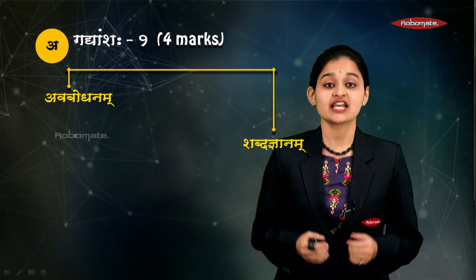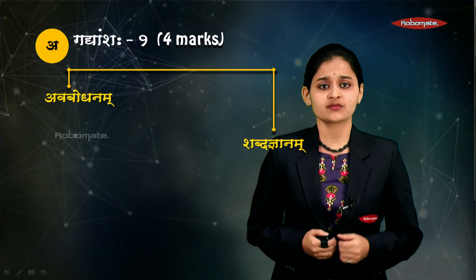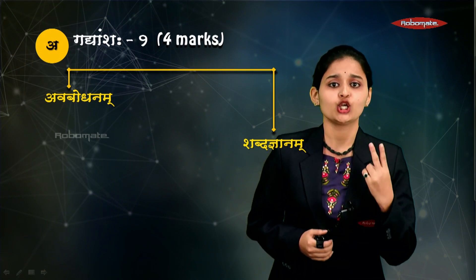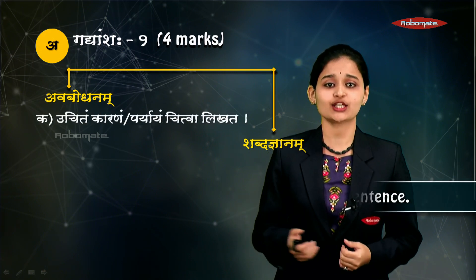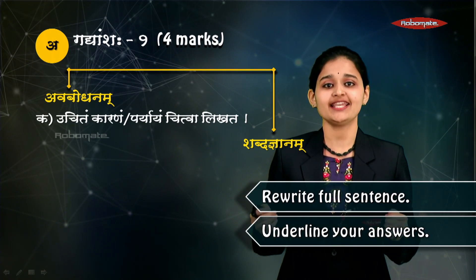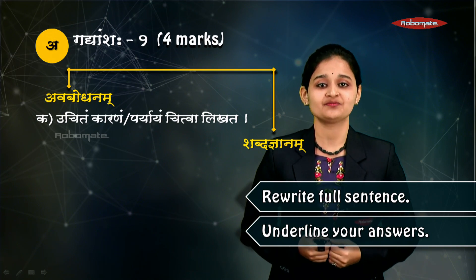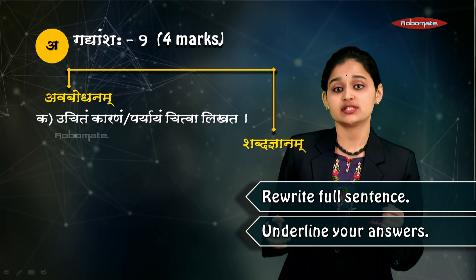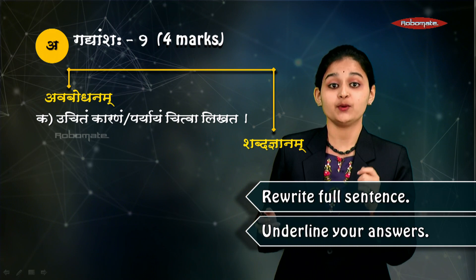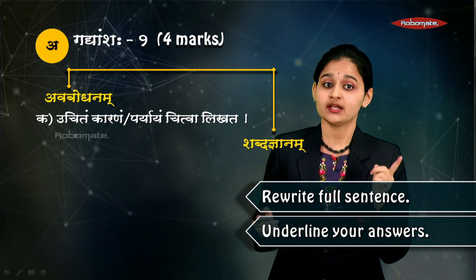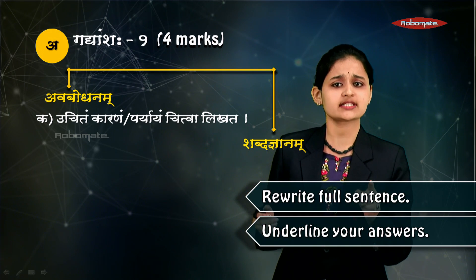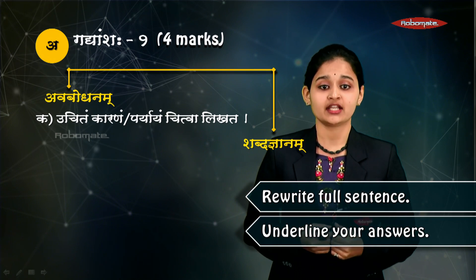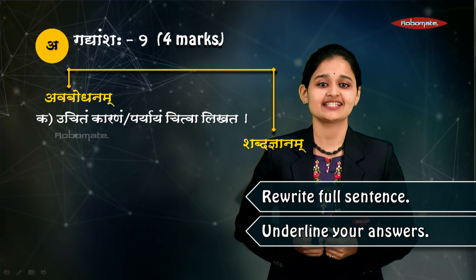Let us begin with Prathamaha Gadyamsaha. In avabodhanam there are three krithis, out of which we have to attempt any two. The first krithi is uchitan karanam va paryaayanchat va vakyam punar likhata — the question will be given with two options: either one word or one reason. Find the correct reason from the passage and rewrite the sentence.